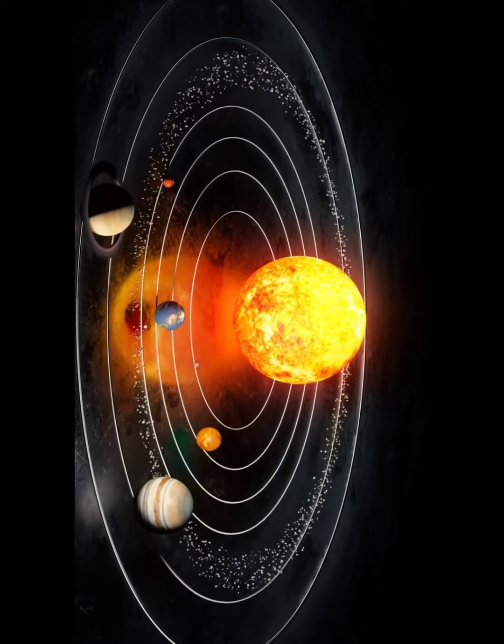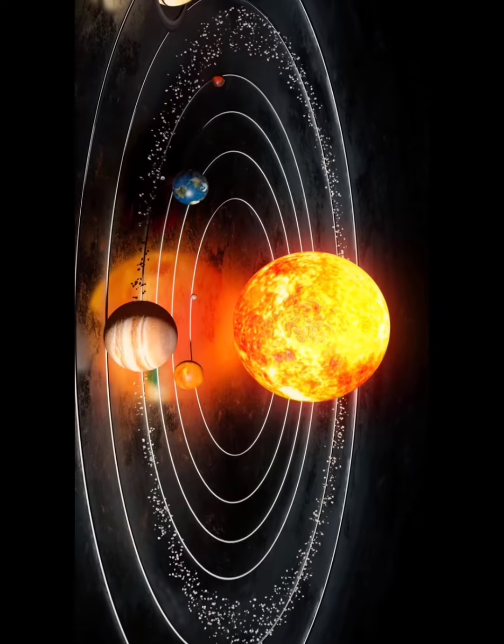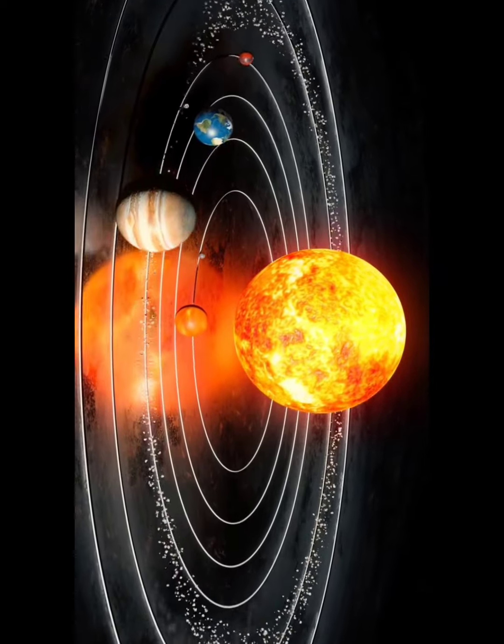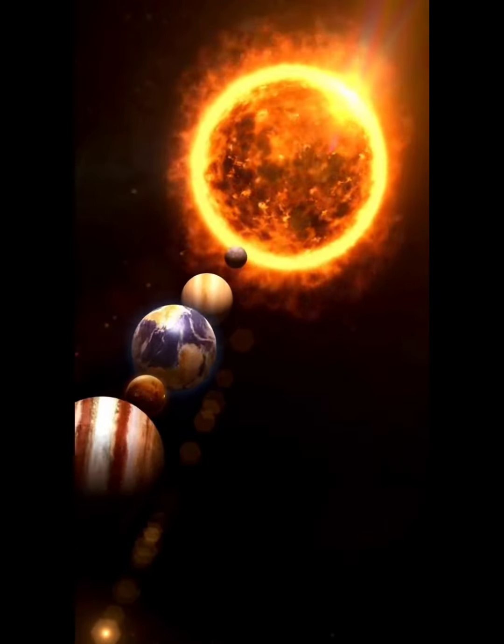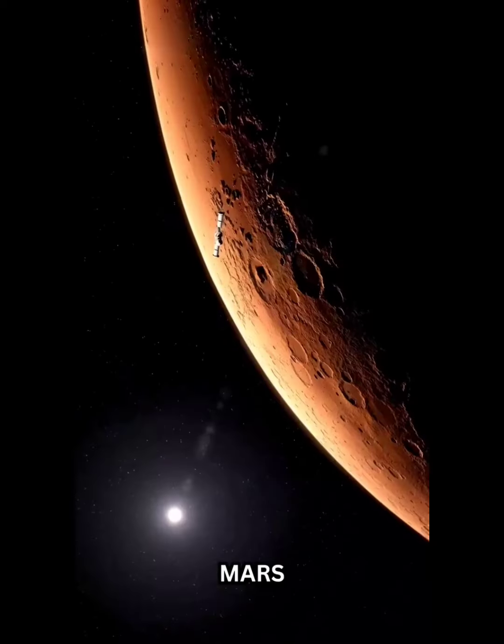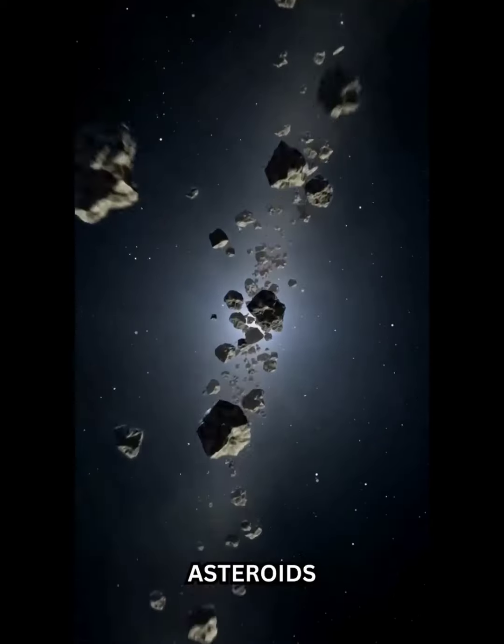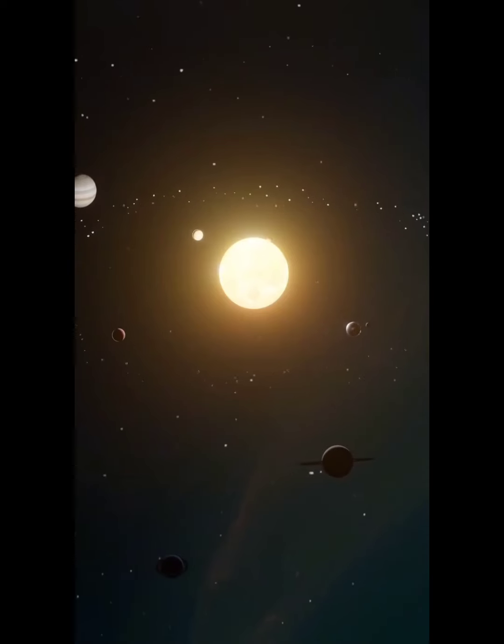After the sun, the largest objects in the solar system are the planets. In order from closest to the sun, these planets are Mercury, Venus, Earth, Mars, Jupiter, Saturn, Uranus, and Neptune. Most of them orbit the sun in paths shaped like circles.